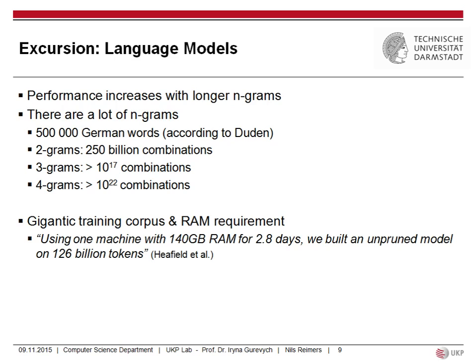This is mainly due to the sheer number of n-grams. In German, we have around 500,000 words according to Duden. Going to two-grams gives 250 billion combinations, and four-grams gives 10 to the power of 22 combinations. You need gigantic training corpora and RAM requirements. A state-of-the-art approach uses, for example, 140 gigabytes of RAM and was trained on 126 billion tokens, which is not ideal.